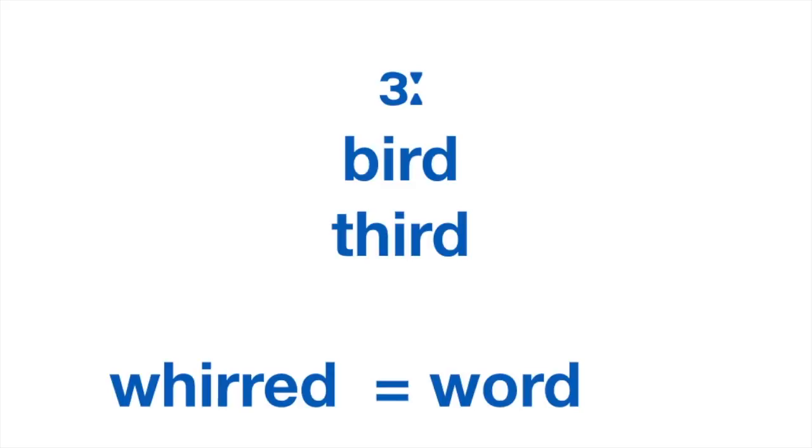So with that in mind, look at the pair of words at the bottom. Word and whirred, they're exactly the same. They are homophones, which means there's no difference in pronunciation between the two. So it's not word and ward with an OR vowel with rounded lips, but word and whirred, exactly the same.